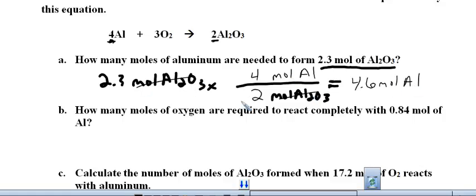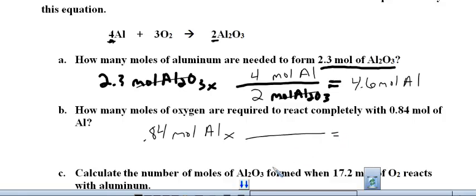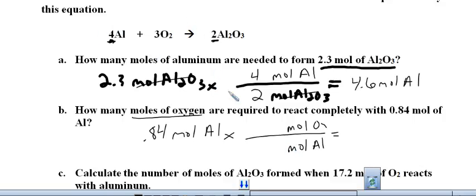Remember, I'm just multiplying across the top and dividing across the bottom — just like any other dimensional analysis we've done in the past. I'll do number 2 with you also. We start with 0.84 moles of aluminum. Again, I want to cancel, so I'm going to put moles of aluminum on the bottom. I always want to cancel my given with the bottom of the conversion factor. Now I'm looking for moles of oxygen — just another mole ratio between all of these chemicals within this balanced equation.